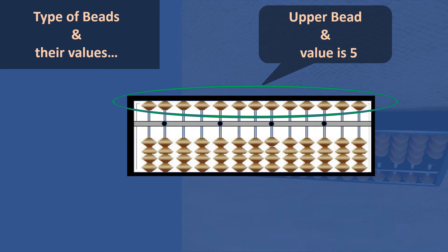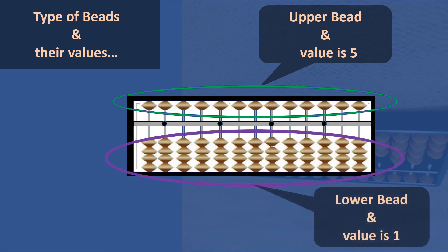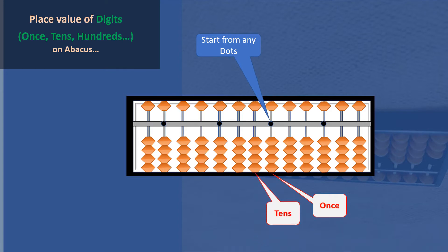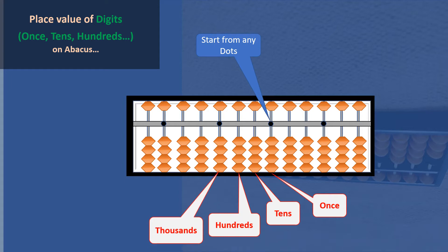There are two types of beads and their values. Upper beads are on the upper side of the bar and each bead has a value of five. Lower beads are on the lower side of the bar and each bead has a value of one. For place value of digits: starting from the chosen dot, the first column represents ones, the second tens, the third hundreds, and the fourth thousands.